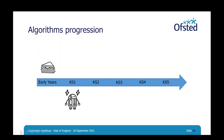As we move to key stage one, we might see the introduction of more technical vocabulary such as algorithm, sequence and debug. Knowledge of how simple algorithms might be implemented on digital devices such as robots or within simple programming environments. In key stage two, we might see the introduction of core algorithmic constructs such as repetition and selection, or decisions in algorithms, and implementing algorithms in a more complex programming language. In key stage three, building upon this knowledge but adding knowledge of standard algorithms used for sorting and searching data, such as a bubble sort.